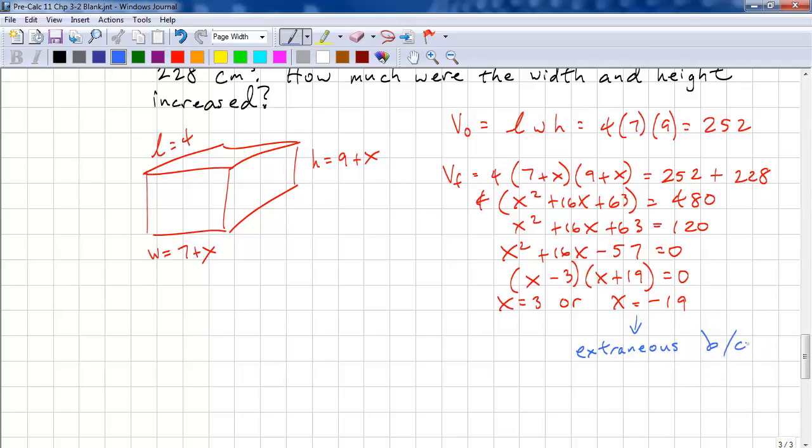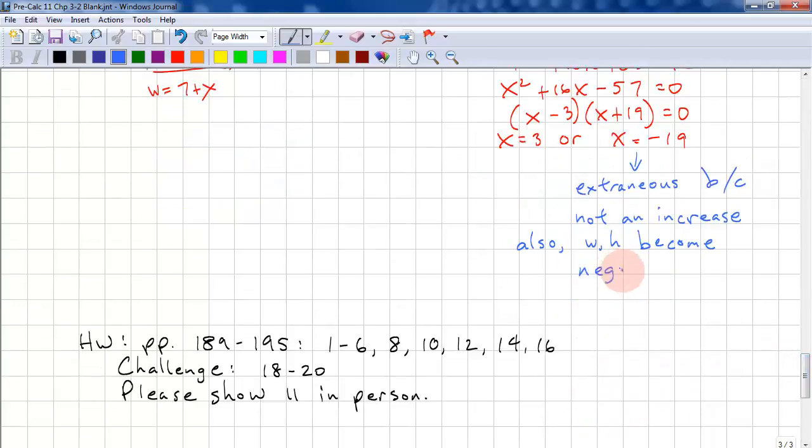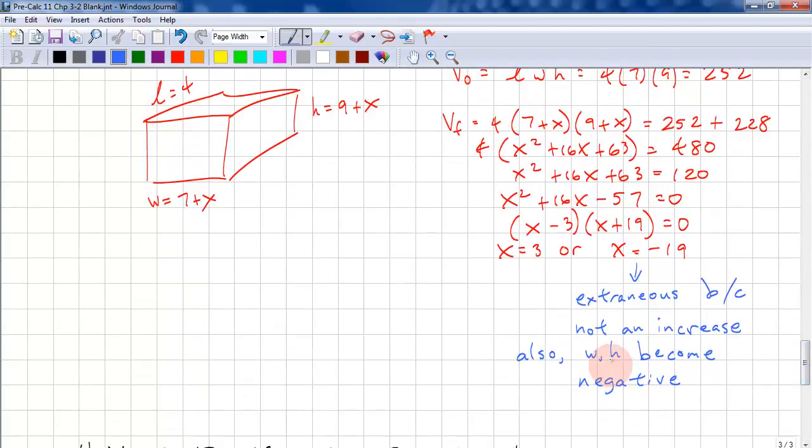This is extraneous for two reasons. And it's because, first of all, it's not an increase because it's negative. It's a decrease. Also, it makes the width and height negative. So, if we add minus 19 to this, we get minus 12. We add minus 19 to this, we get minus 10. Negative 12 and negative 10 are not good measurements of length because they're negative.